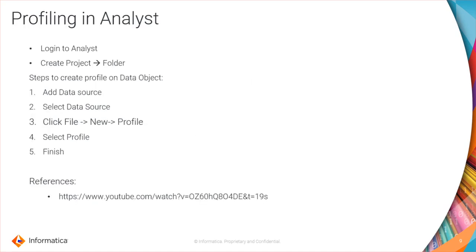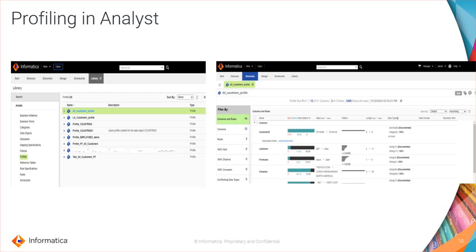For profiling using Analyst, log in to the Analyst portal, create a project folder, then add a data source. Select the data source, click on File > New Profile, select the profile, and click Finish. This slide gives an overview of profiling using Analyst — the right side shows the results that can be seen in the Analyst portal.